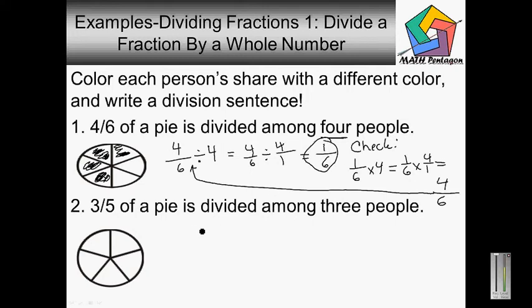Let's go to our next problem. It's asking us, 3 fifths of a pie is divided among 3 people. So we have 5 pieces in the pie and we want to color in 3.